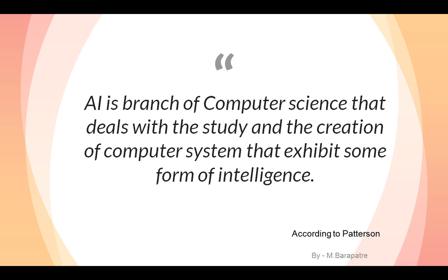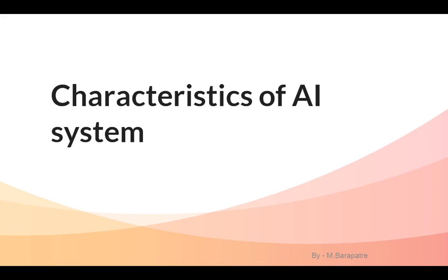AI is a branch of computer science that deals with the study and creation of computer systems that exhibit some form of intelligence. These are the basic definitions. Now let's discuss the characteristics of an AI system.